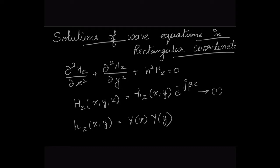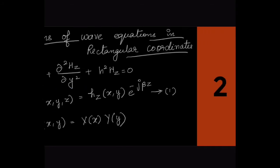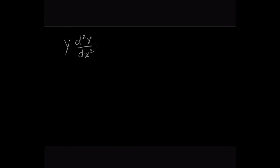So here, X(x) is a function of x coordinate only and Y(y) is a function of y coordinate only. If you substitute this Hz equation into the wave equation, this can be written as Y·(d²X/dx²) + X·(d²Y/dy²) + h²·XY = 0, where Hz has been substituted as X·Y.